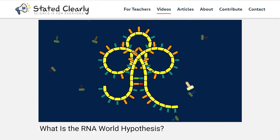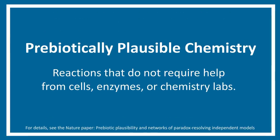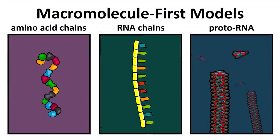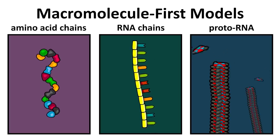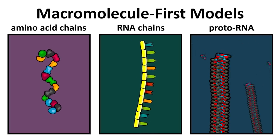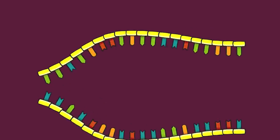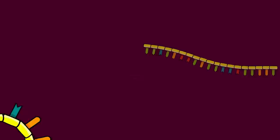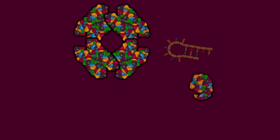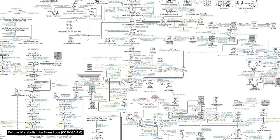That said, we haven't yet shown that these are prebiotically plausible. We don't know how these evolving molecules would have gotten started on a lifeless planet. Under these macromolecule-first hypotheses, it's often assumed that metabolism isn't really something we need to worry about when studying the origin of life. Once the first evolving macromolecules adapted to, and in some cases evolved to cooperate with one another, this thing that we call metabolism was generated automatically.